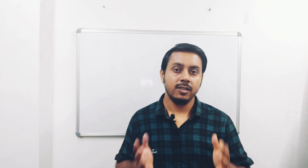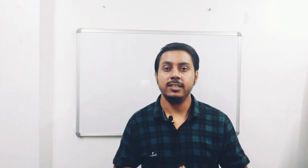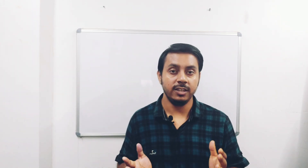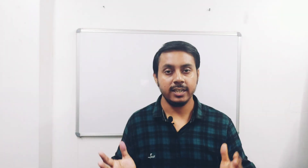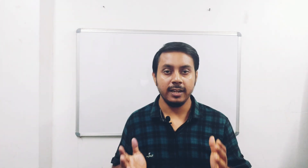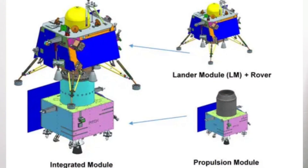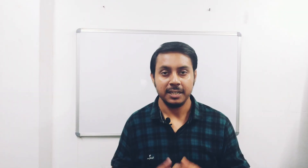Chandrayaan 2 had three parts: an Orbiter, Vikram Lander, and Pragyan Rover. The Lander was named after Vikram Sarabhai, who was the founder of ISRO, and Pragyan means wisdom in Sanskrit. In the case of Chandrayaan 3, it consists of a propulsion module, Vikram Lander, and Pragyan Rover, but with much more improved versions of technology and sensors.